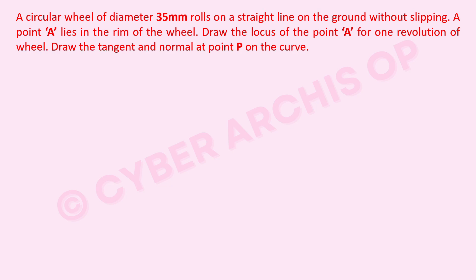The question: a circular wheel of diameter 35 mm rolls on a straight line on the ground without slipping. A point A lies on the rim of the wheel. Draw the locus of point A for one revolution of the wheel. So we have to draw the cycloid for one revolution, with the wheel having a diameter of 35 mm.